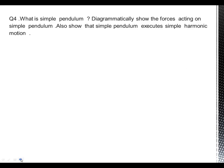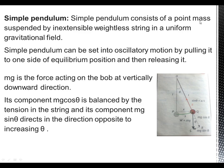Today our topic is: what is a simple pendulum, diagrammatically show the forces acting on it, and show that a simple pendulum executes simple harmonic motion. A simple pendulum consists of a point mass (small mass) suspended by an inextensible, weightless string in a uniform gravitational field. These are the ideal conditions of a simple pendulum.